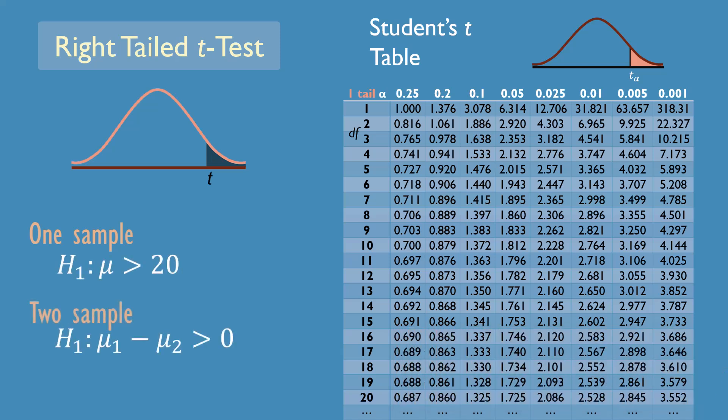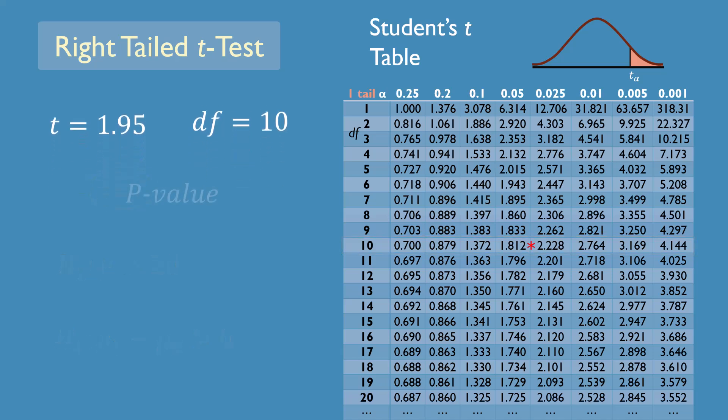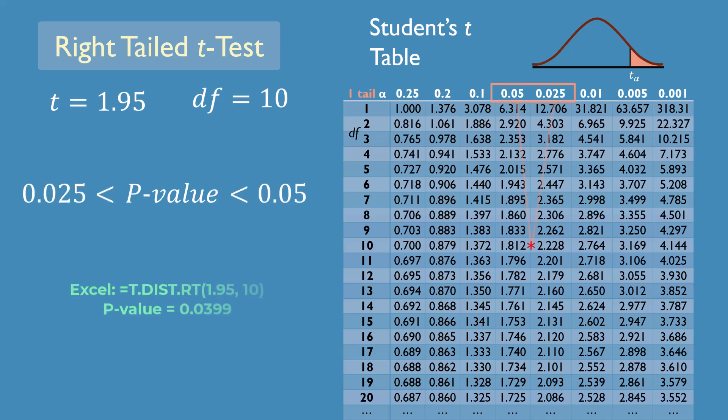Suppose the calculated test statistic is t equals 1.95 with degrees of freedom 10. To find the p-value from the t-table, we go to the row for df equals 10 and see where 1.95 will fall. We can see that it will be between 1.812 and 2.228. This informs us that the p-value of the test will lie between 0.025 and 0.05.